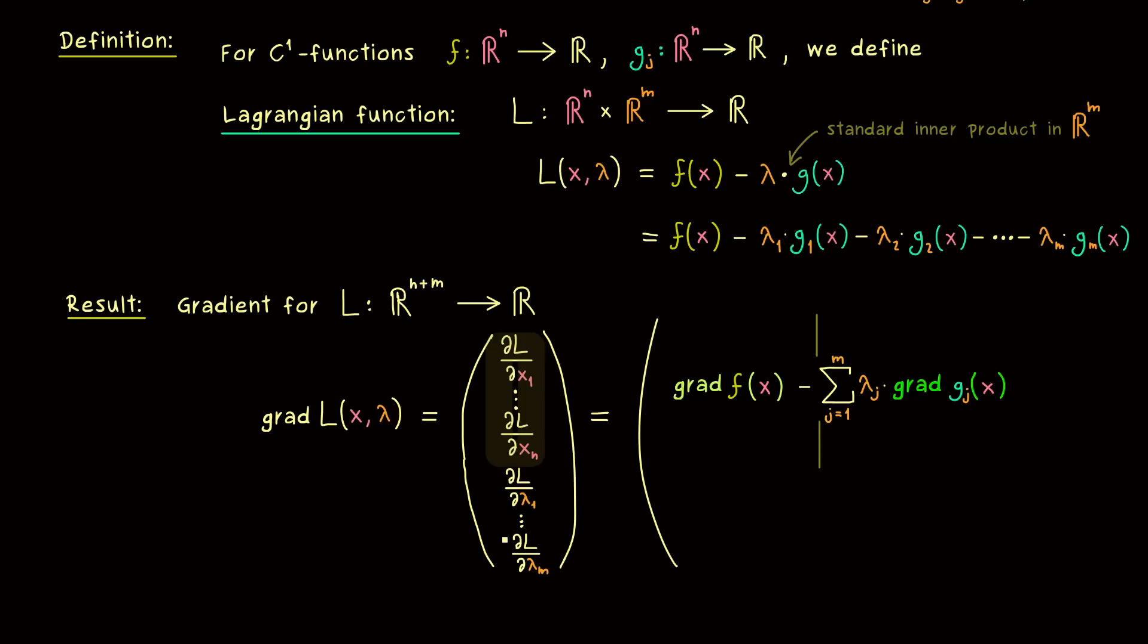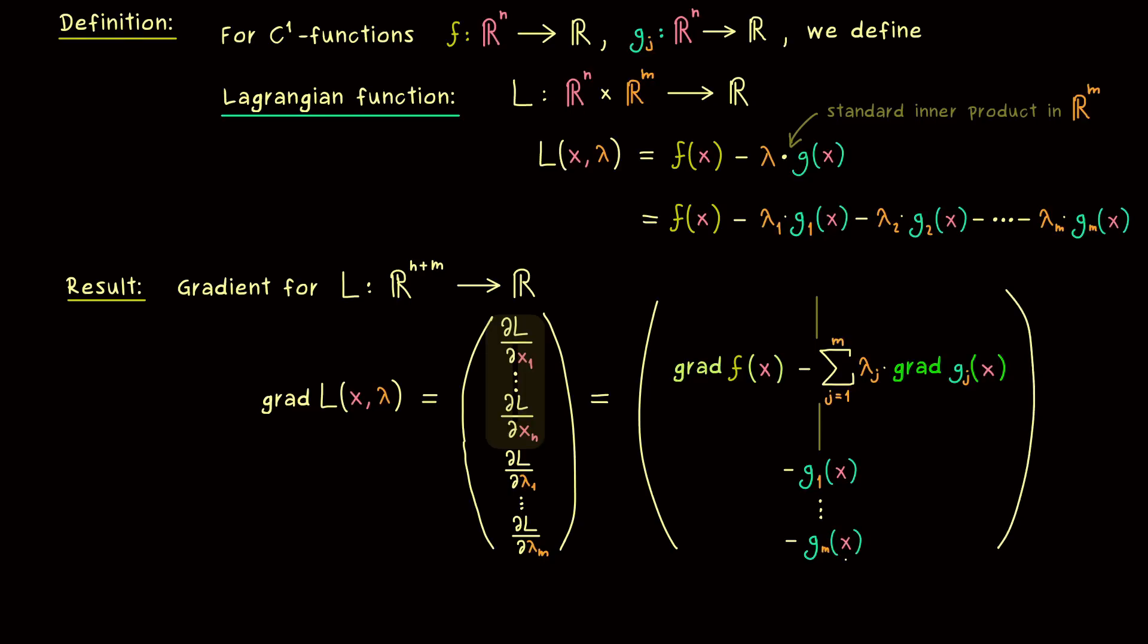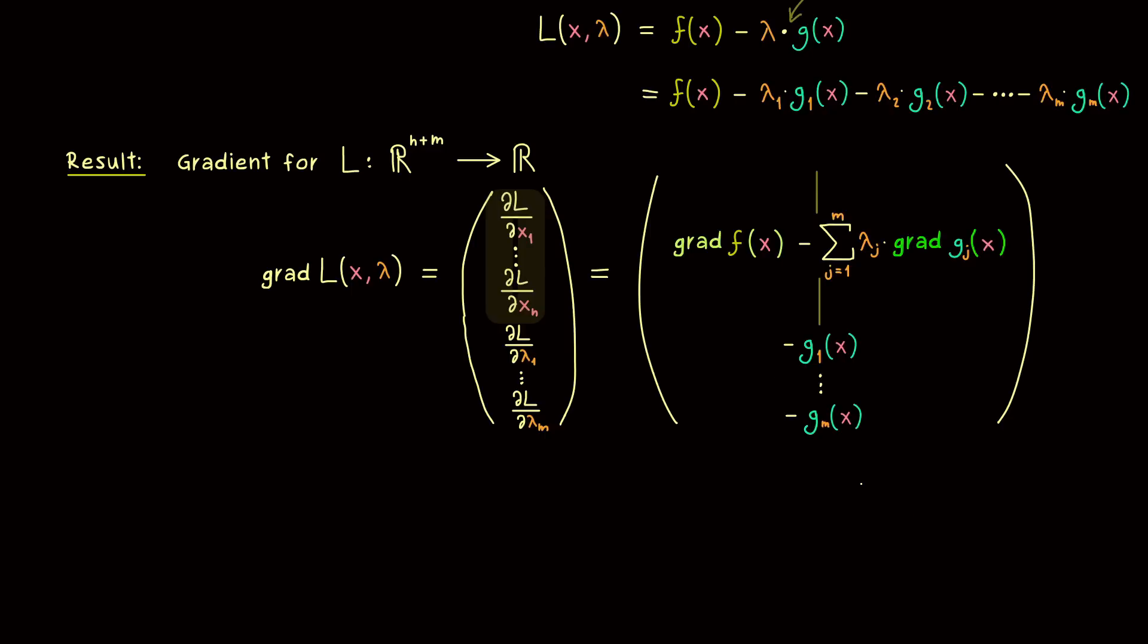Before we discuss that, let's finish the whole gradient. The next question is: what is the partial derivative of L with respect to λ₁? This is easy to see, because λ₁ only occurs in this term here, so it's just minus g₁ of x. We have a similar thing for all the other lambda coefficients, and the last one would be minus gₘ of x. In other words, we could simplify these m components by saying this is minus g of x.